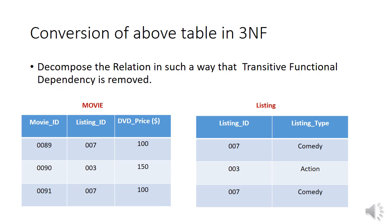Movie ID is the primary key for the Movie table, so Listing ID and DVD Price totally depend on the primary key. Similarly, in the Listing table, Listing Type totally depends on Listing ID, which is the primary key of the Listing table. This is how we have removed the transitive functional dependency, and we can now say both tables are in 3NF.